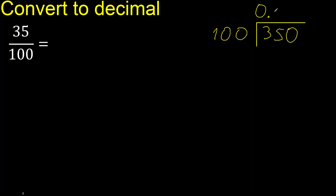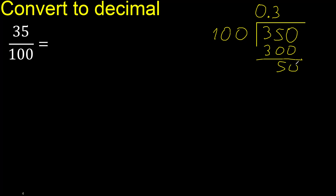Multiplied by 4 is 400, which is greater. Multiplied by 3 is 300, which is not greater. Subtract — there is no number that goes down, therefore complete. Always complete with 0.